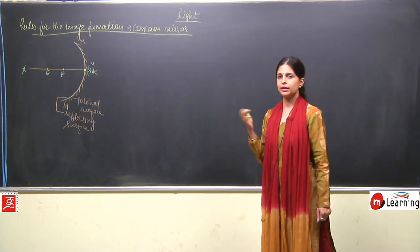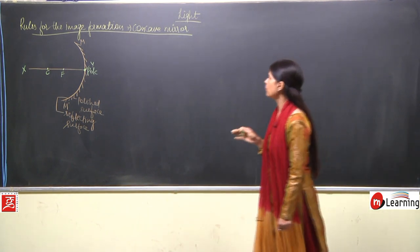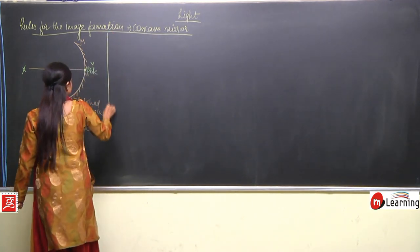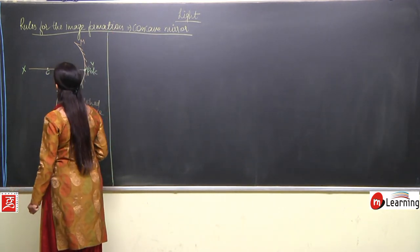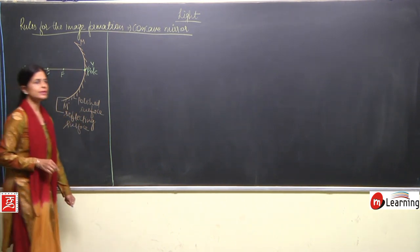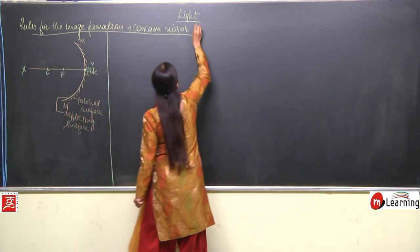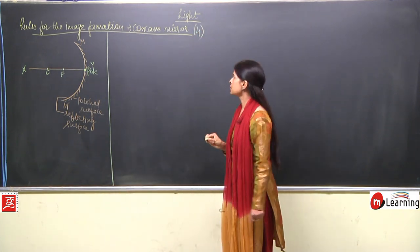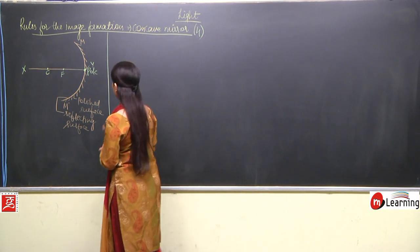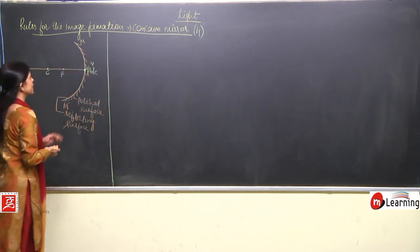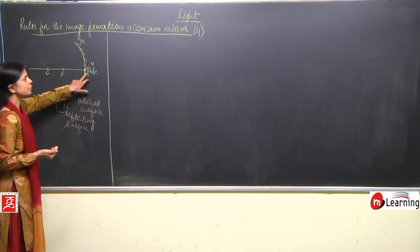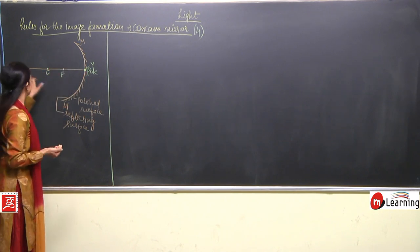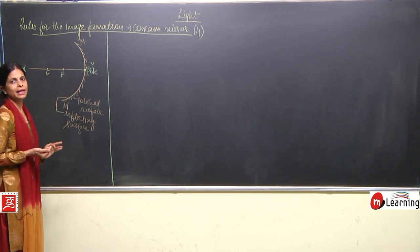Now we are talking about certain rules. There are in all four rules and we will be discussing all of them. I have drawn this just to understand the positions: pole, focus, center of curvature, M dash the mirror, and X-Y the principal axis.